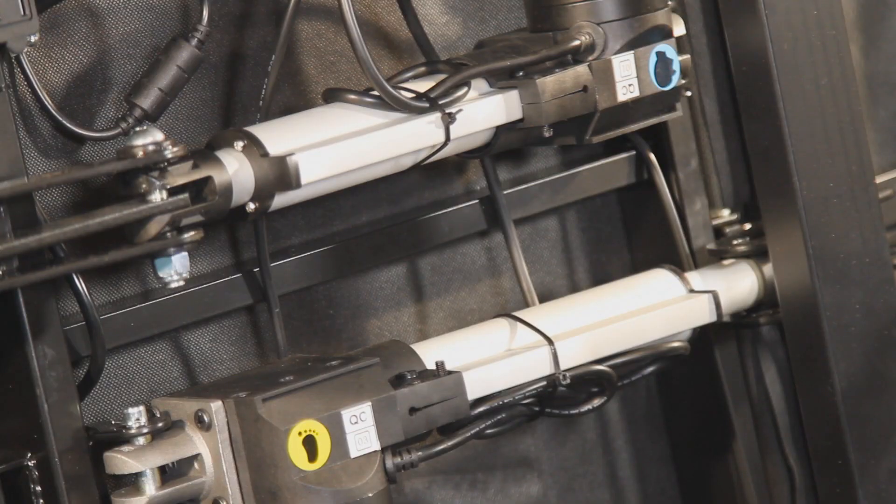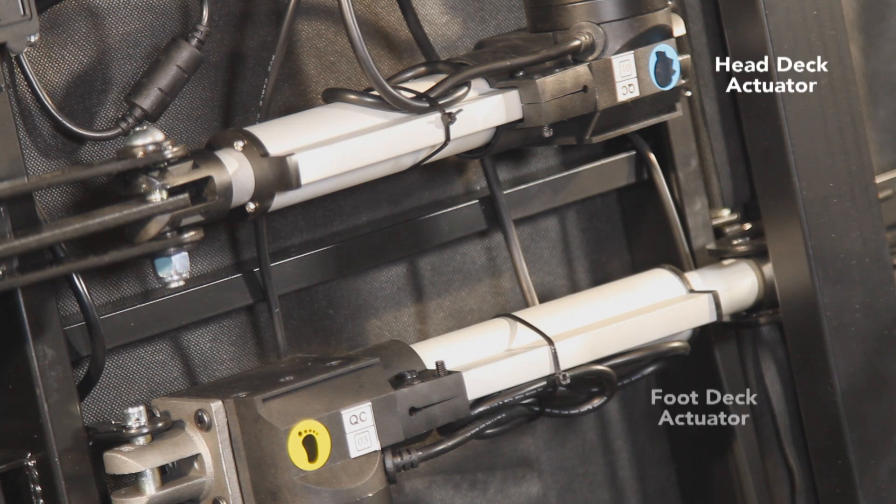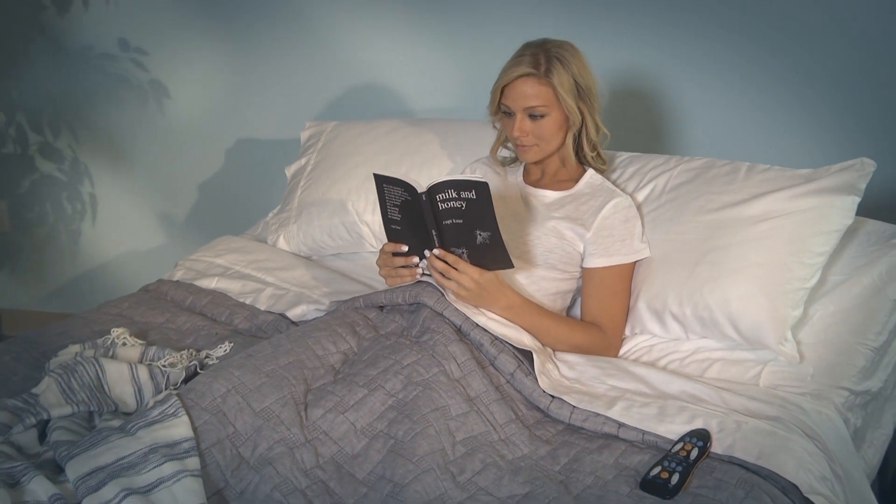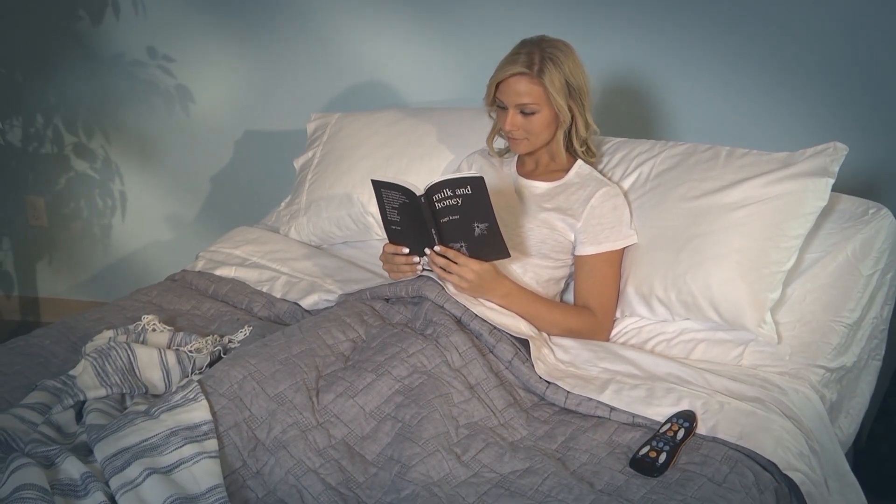Now find your actuator that needs to be replaced. On most bases there are two actuators: one for the head deck and one for the foot section. In some models there is a third actuator used for the lumbar support feature.